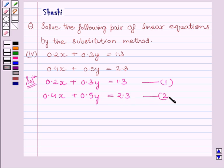Now from equation 1 we get x is equal to 1.3 minus 0.3y upon 0.2.